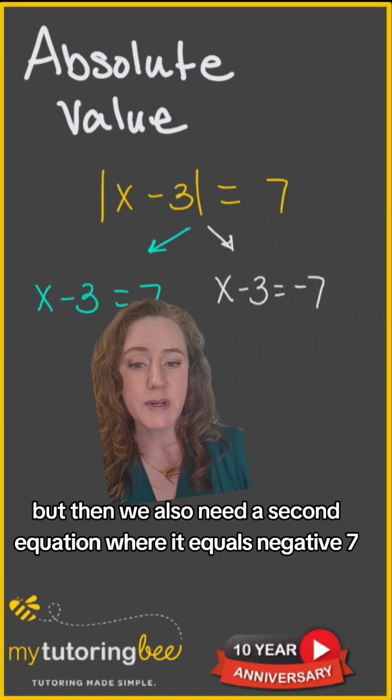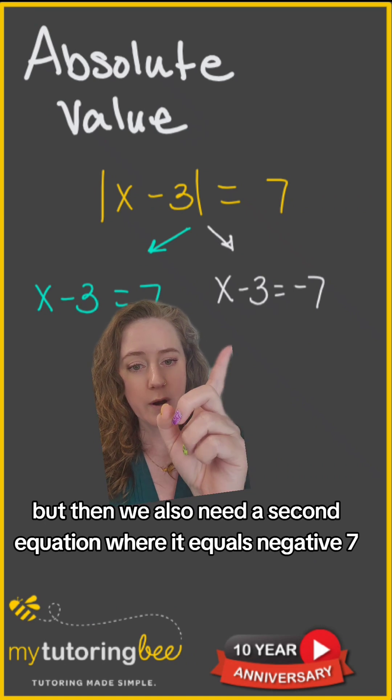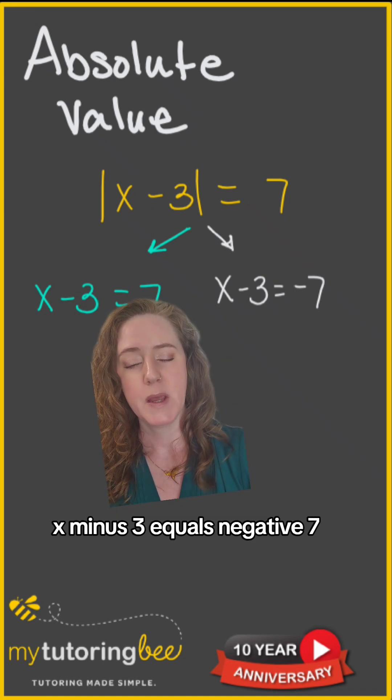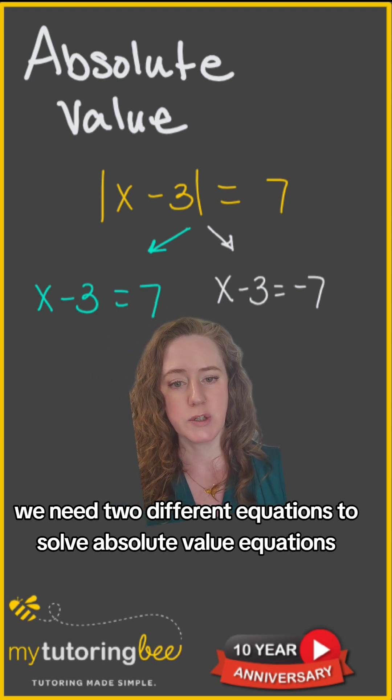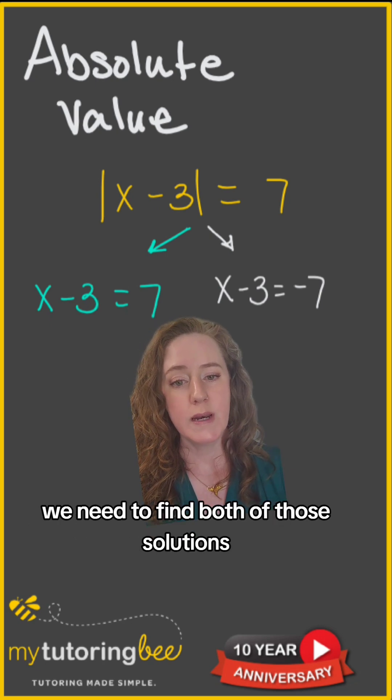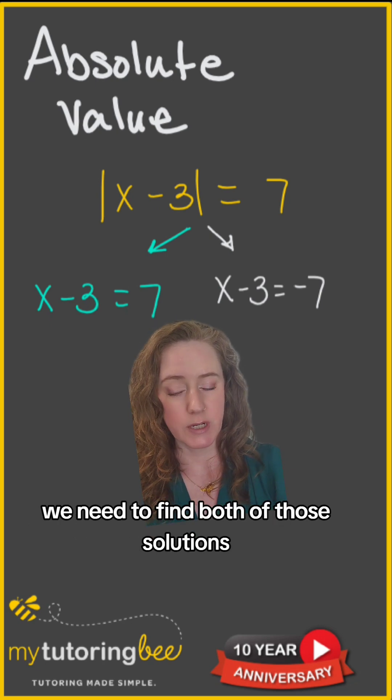But then we also need a second equation where it equals negative 7. x minus 3 equals negative 7. We need two different equations to solve absolute value equations because whatever is in those absolute value brackets, whether it's positive or negative, we need to find both of those solutions.